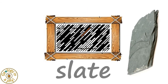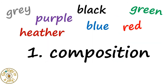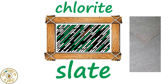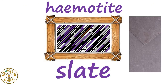Many slates are grey in colour, but slate can be a variety of colours, due to its mineral composition and the location where it was formed. Chlorite, for example, gives slate a green colour, calcium carbonate gives slate a blue colour, and haematite gives slate a purple colour.